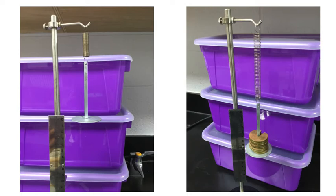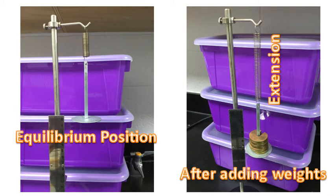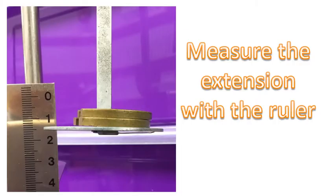So here we have the spring in two different positions. Notice in one position we've added lots of weights to the spring and those weights cause the spring to extend. When the spring does not have any weight added to it, we say it's an equilibrium position. After adding weights, notice the spring is extended. And so, to measure the extension we'll be using the ruler.